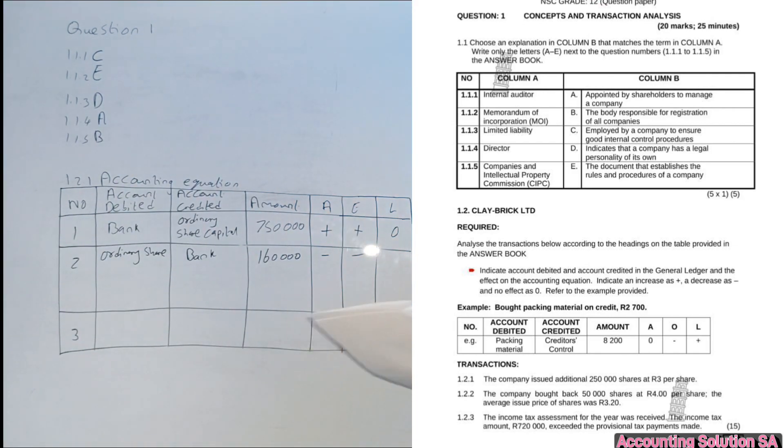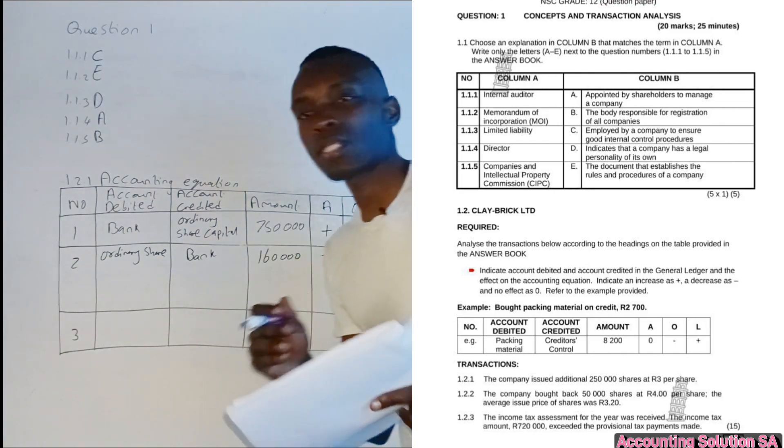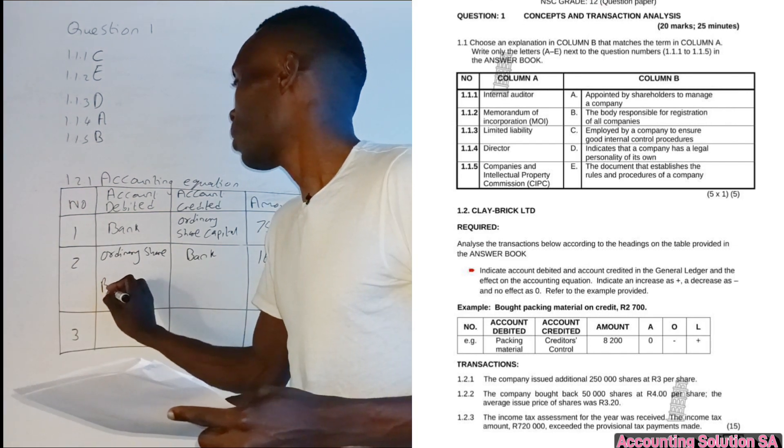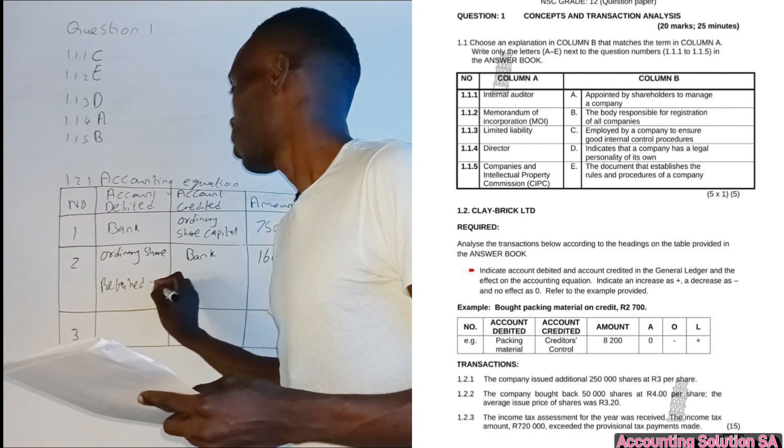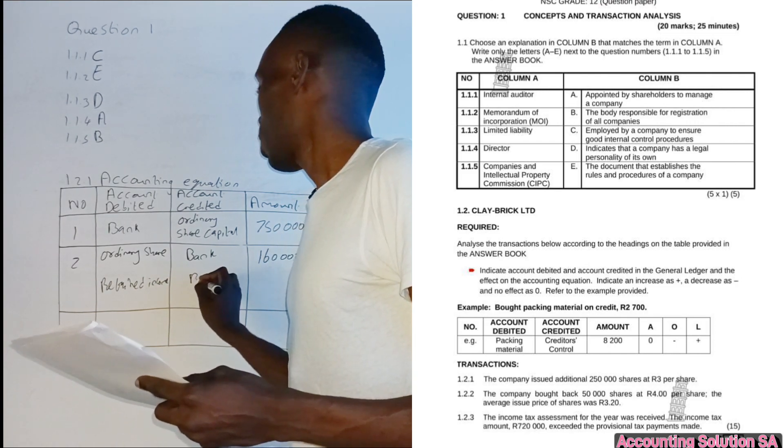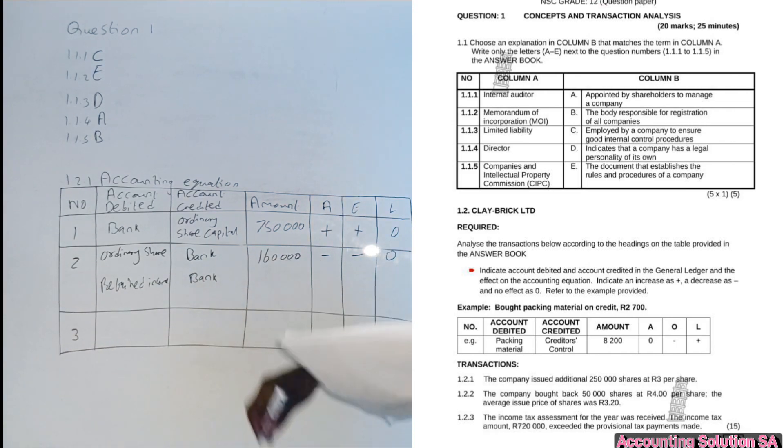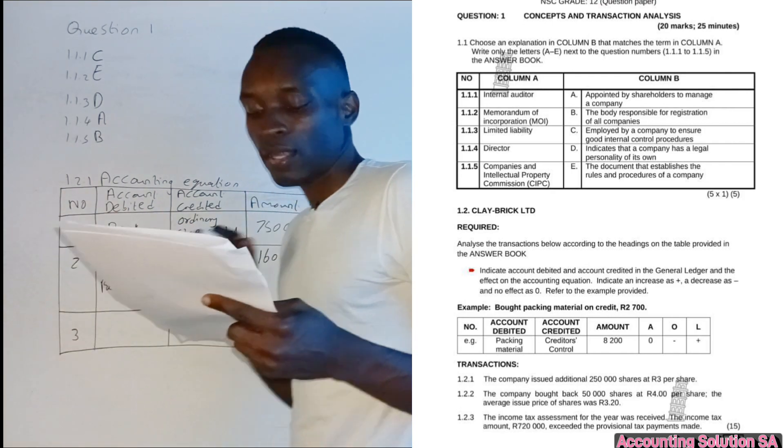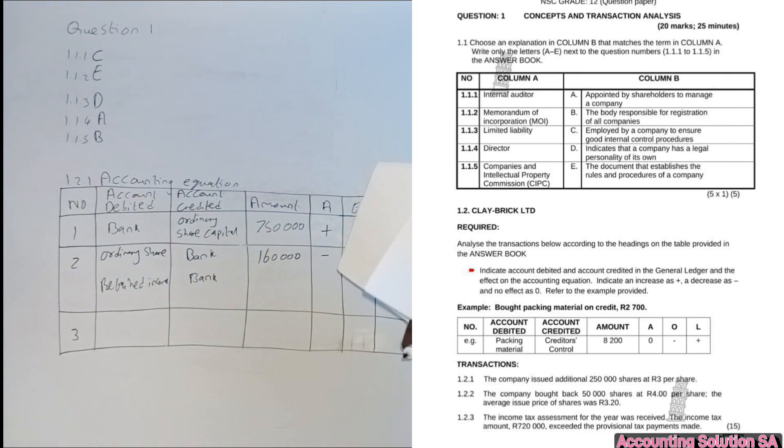This account is going to have two transactions because the other one I said is going to subtract retained income. Retained income will subtract bank. Remember in this case we multiply 50,000 by the difference between R4 and R3.20 which is 80 cents. 50,000 multiplied by 80 cents is going to give us R40,000. 0.8 multiplied by 50,000 shares gives you this. So our bank has decreased and retained income, our profit has decreased. This side is unchanged.